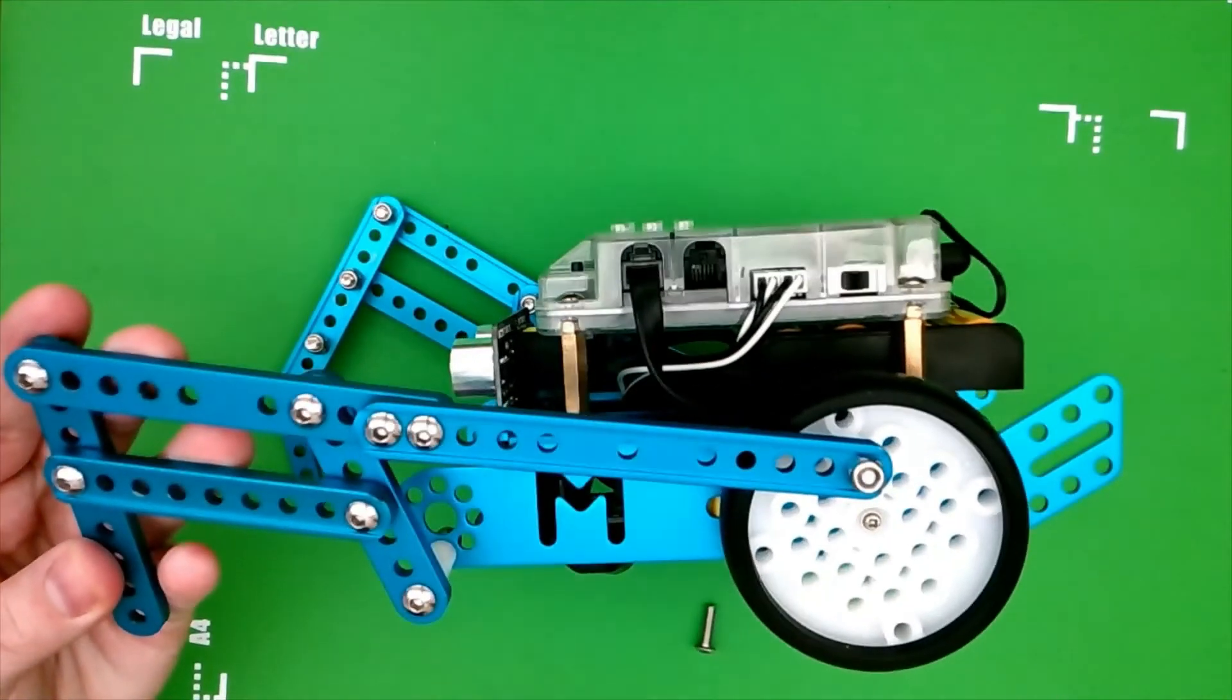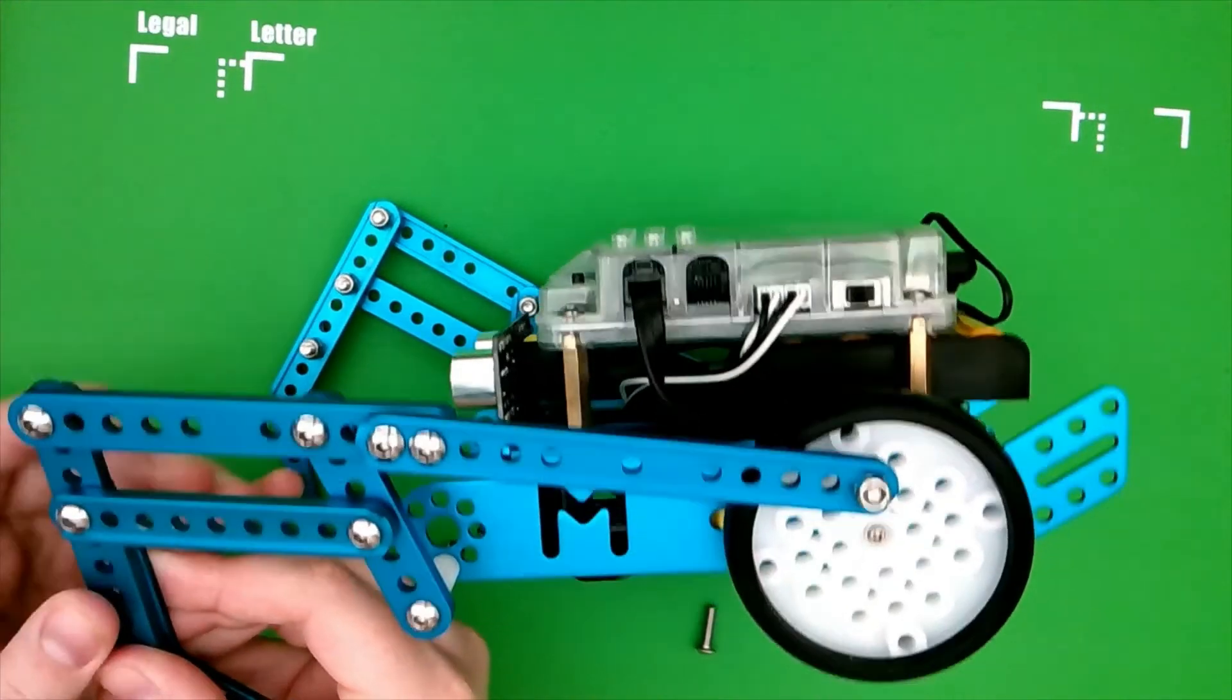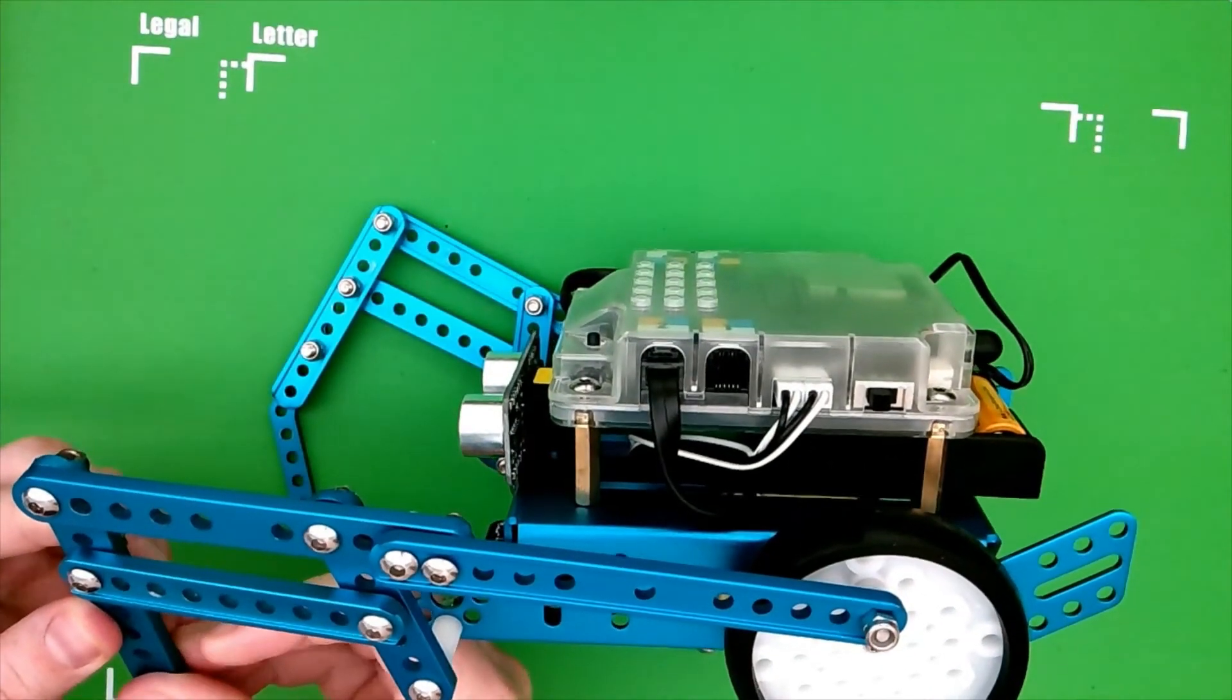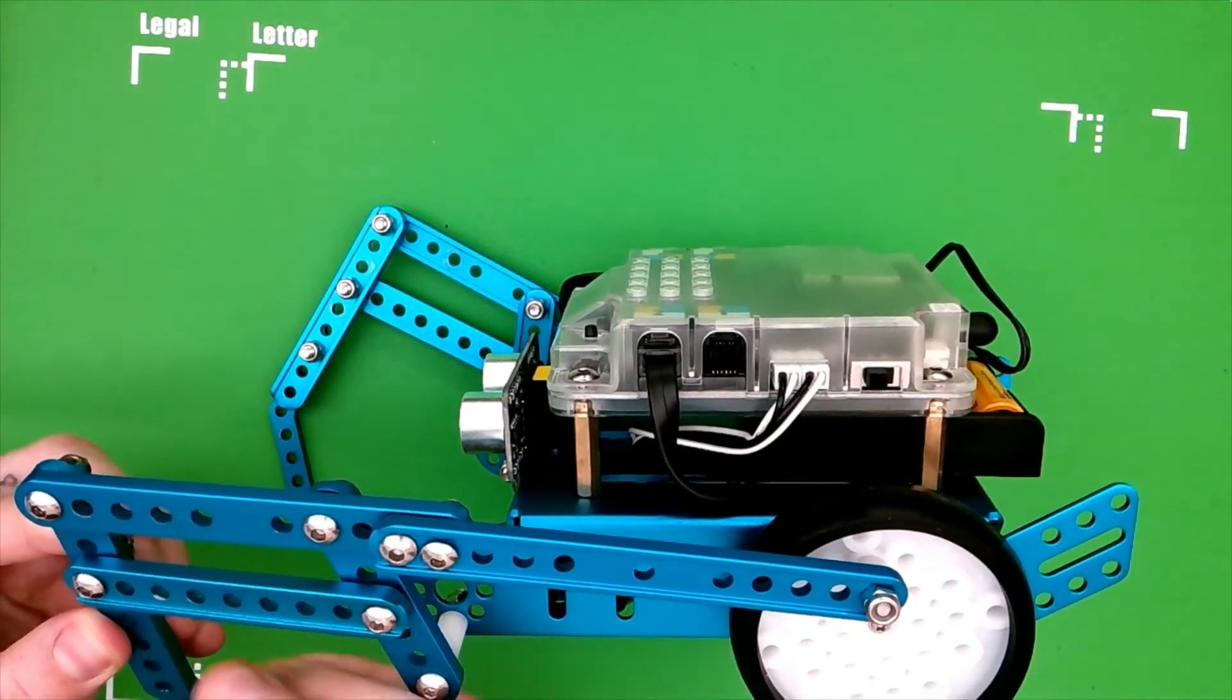And what we're going to do, have it like this. You're going to put it through the second hole of this and the third hole from the bottom on this piece. Second hole, third hole from the bottom. Line that up.